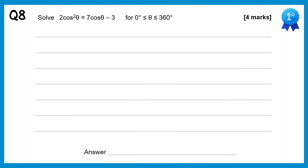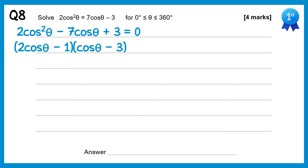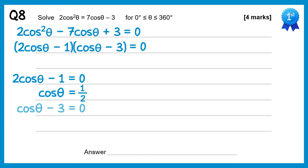For this question we'll subtract 7cosθ and add 3 to both sides, giving 2cos²θ minus 7cosθ plus 3 equals 0. This factorises to give (2cosθ − 1)(cosθ − 3) equals 0, which gives two equations: 2cosθ minus 1 equals 0, rearranging to cosθ equals 1/2, and cosθ minus 3 equals 0, rearranging to cosθ equals 3.